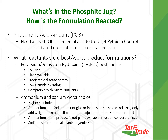Products that are reacted with potassium or potassium hydroxide tend to be the better choice. They have very low salt indices. They are plant available. It gives you more predictable disease control. They have a low osmolality rating — osmolality is essentially a measure of the potential for foliar injury. And they're more compatible with micronutrients. Products reacted with ammonium and sodium tend to be less expensive to make, but they have a higher salt index. Ammonium and sodium do not contribute to increased disease control — they only add weight to the product, increase your salt content, and can adjust or buffer the pH of the product. Ammonium in the product is not plant available; it must be converted first.